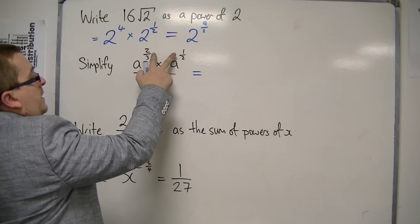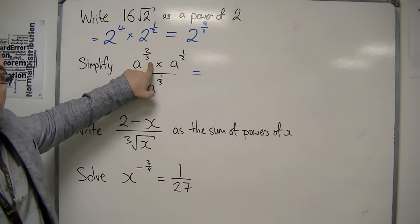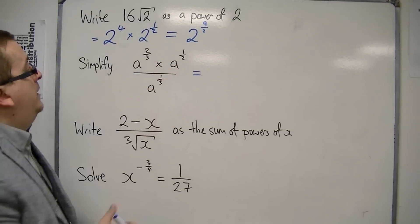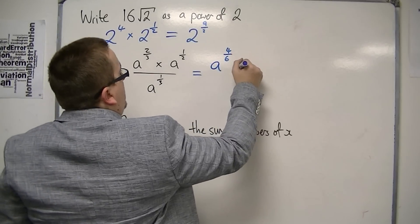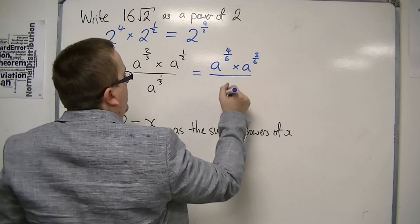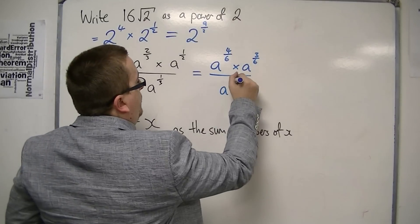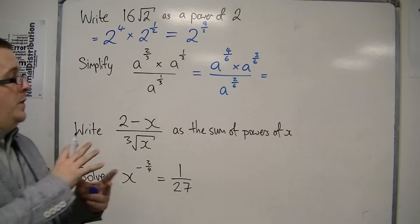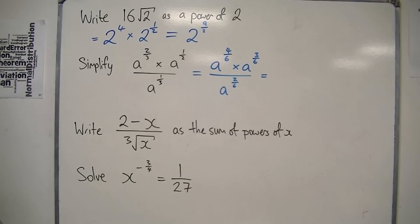We've got a to the 2/3 times a to the 1/2, so we're going to have to add 2/3 to 1/2. Now, 2/3 is 4/6. That's 3/6, so we've got a to the 4/6 times a to the 3/6, all over a to the third, which is the same as a to the 2/6. So, putting it all into equivalent fractions with the same denominator is really going to help.